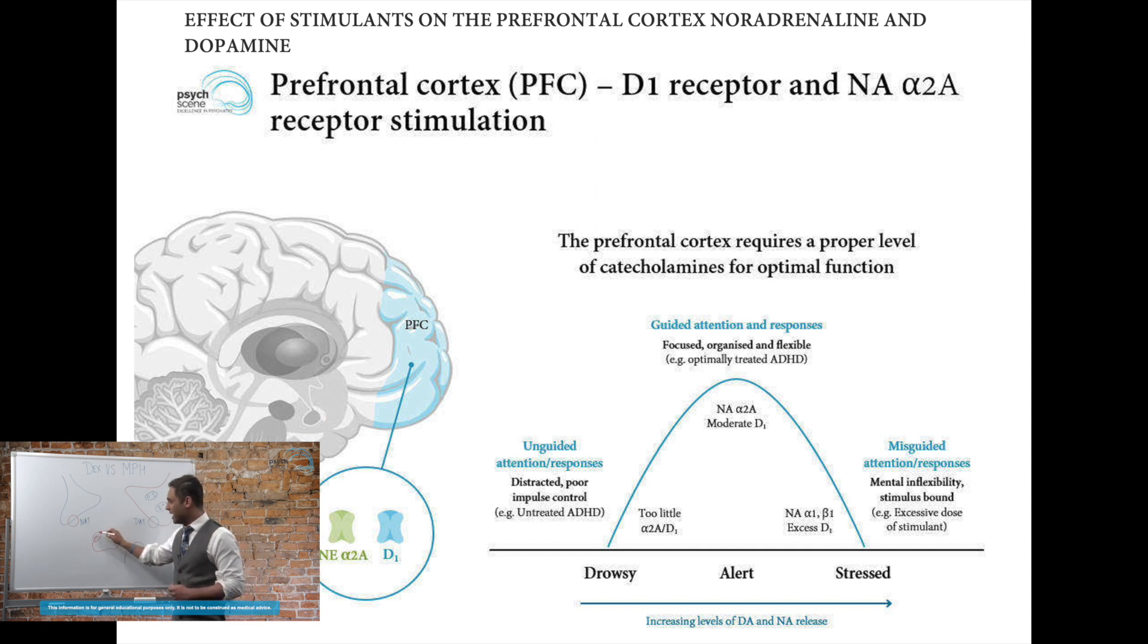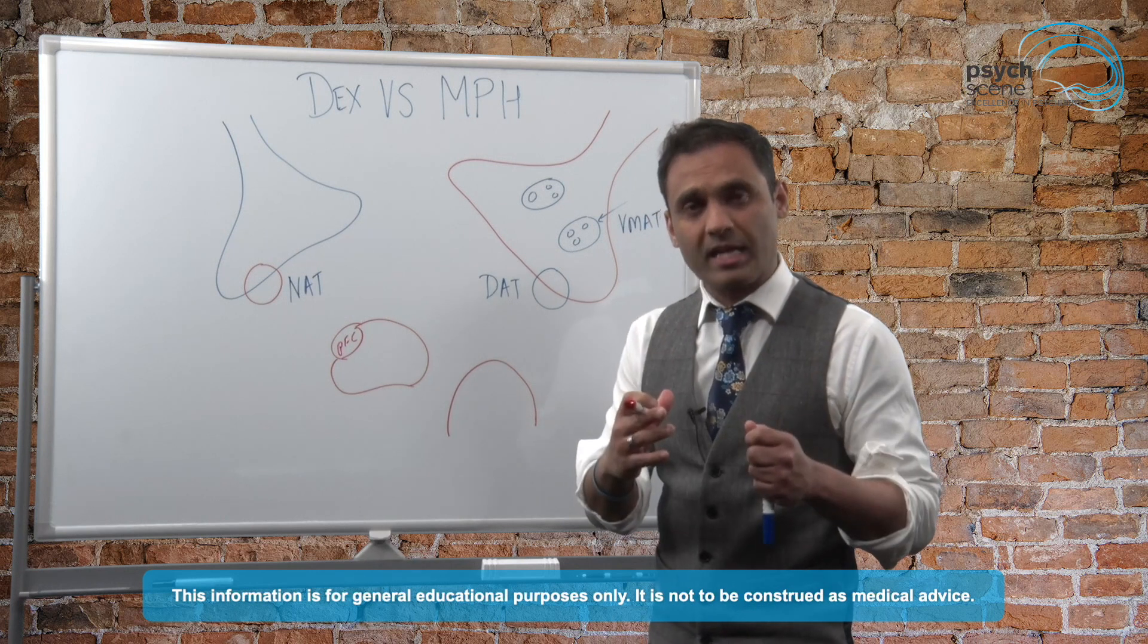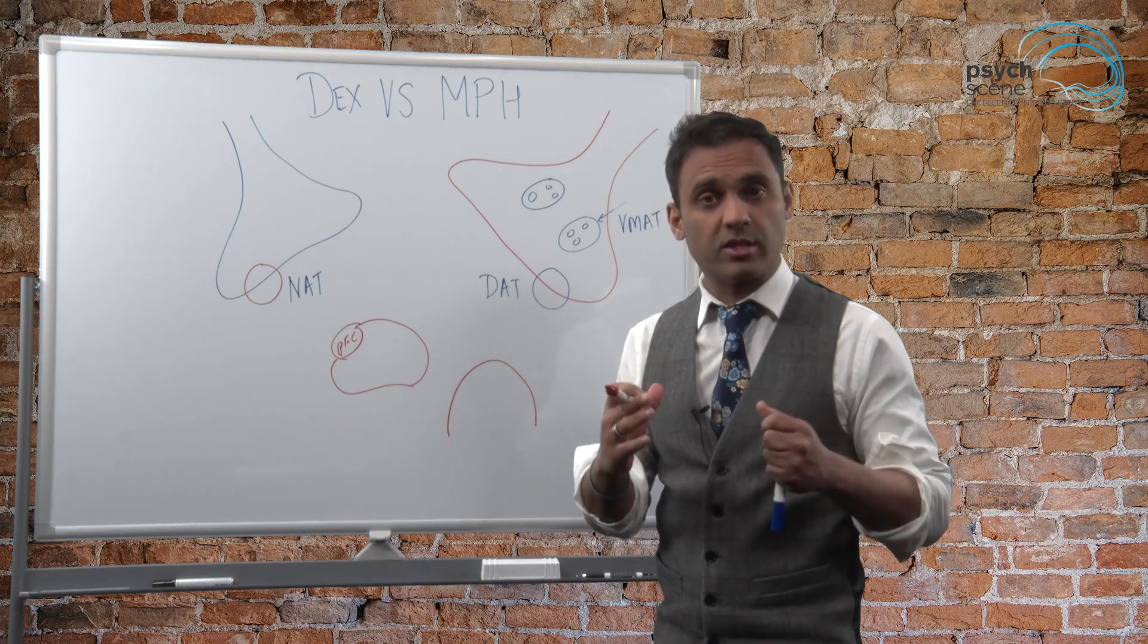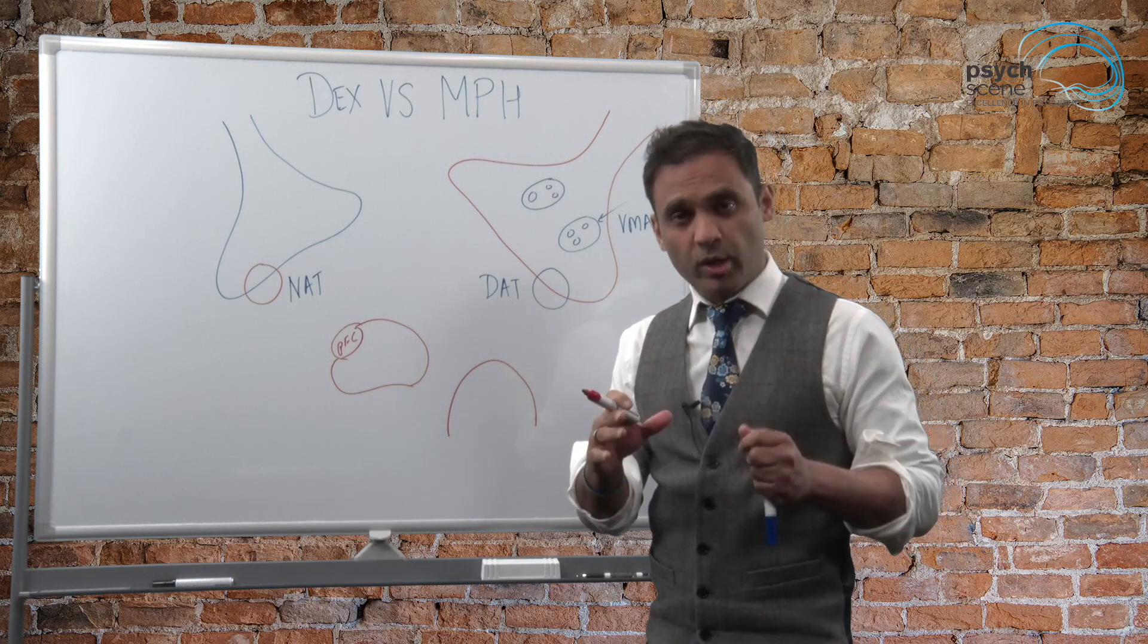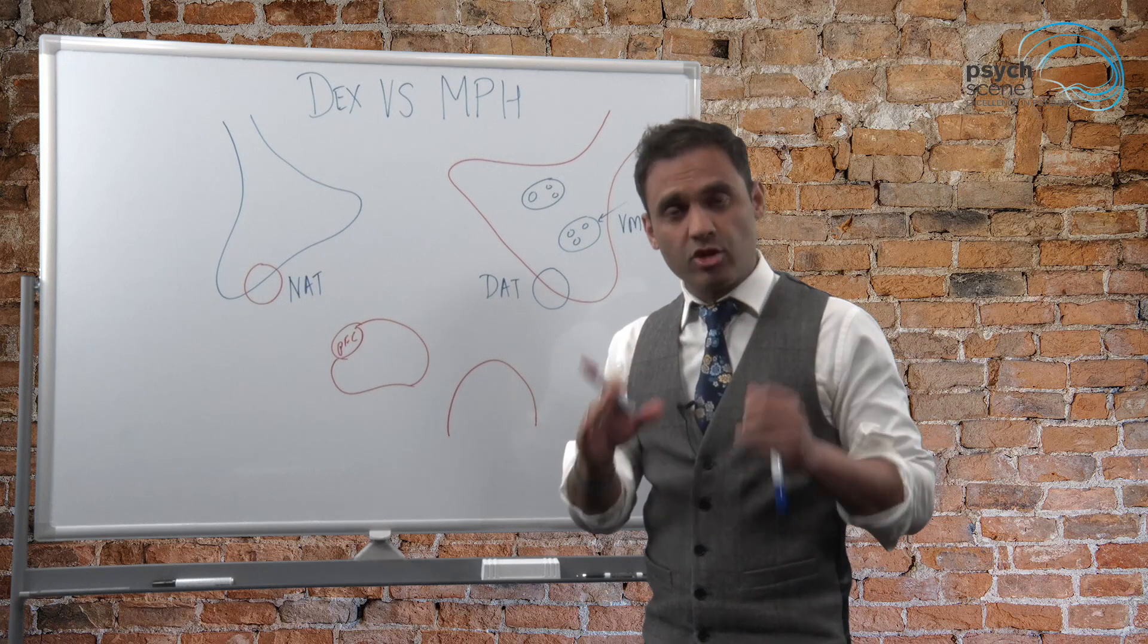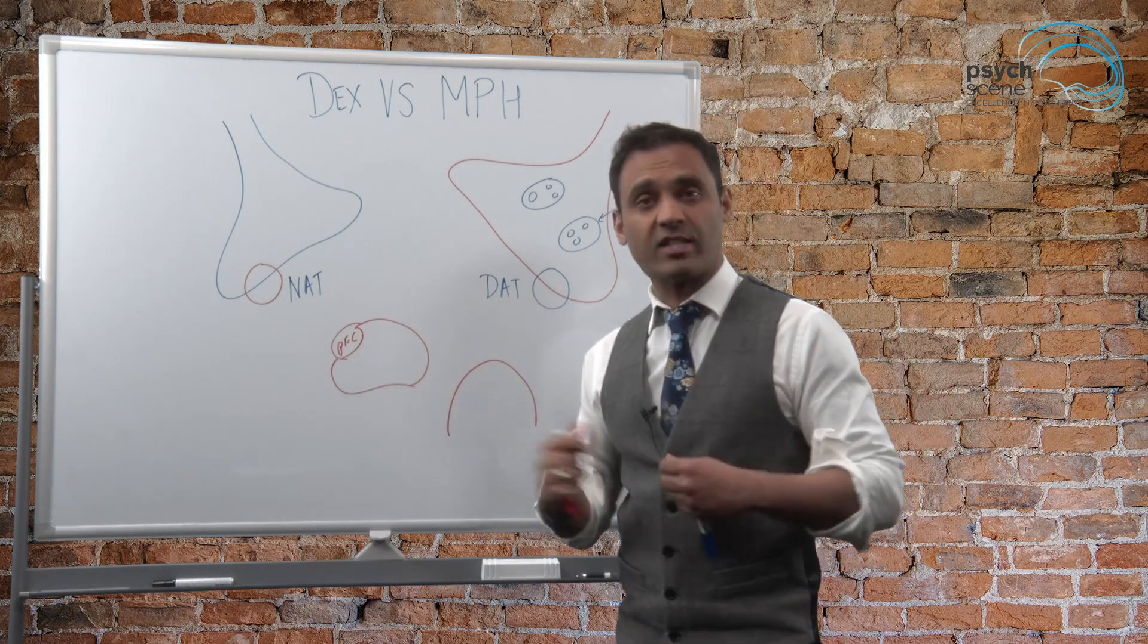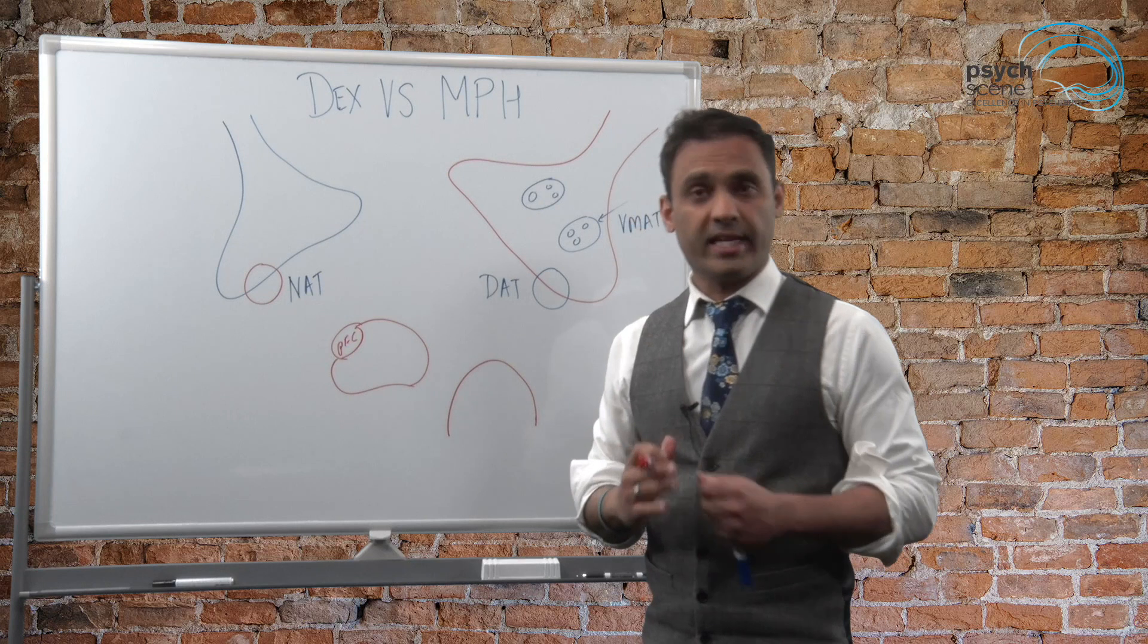So in the prefrontal cortex dopamine receptors, noradrenaline, and the alpha-2 presynaptic and postsynaptic receptors are the main ones that we are looking to target in the treatment. So today what I'm going to be focusing on is dopamine and noradrenaline because those are the main neurotransmitters that these two agents increase in the extracellular space so that they can go and act on these receptors to provide those benefits to treat ADHD.